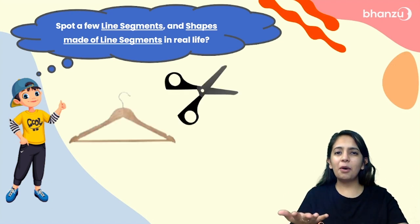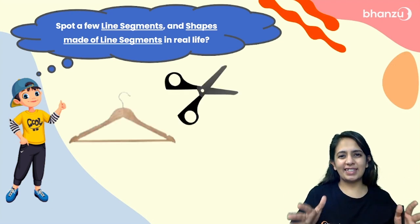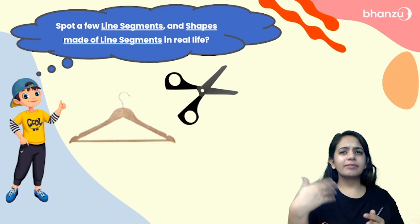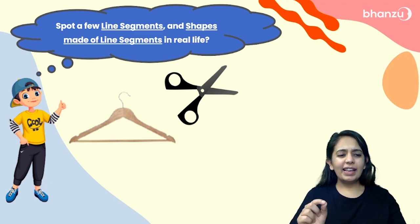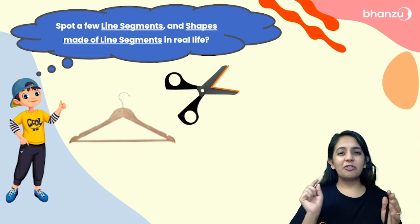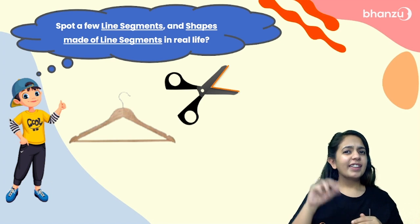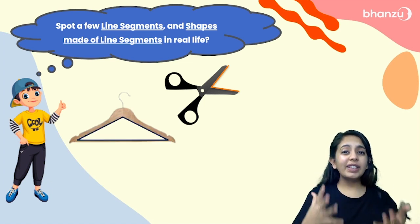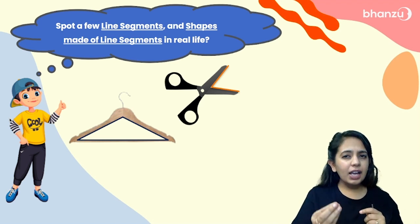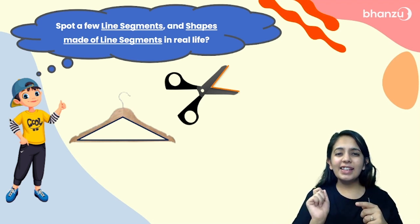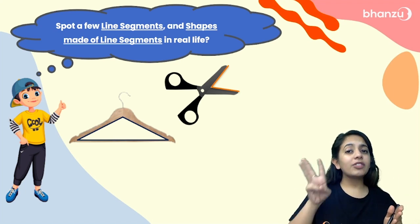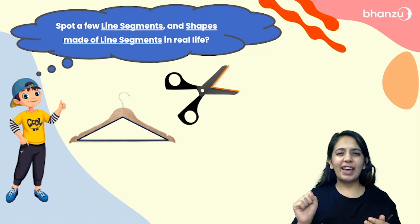For example: table, chair, windows, doors, scissors, lawn handle, etc. How many line segments can you find in a scissor? I can see two over here, and there are more as well. How many line segments can you find in a cloth handle? There are three line segments in the cloth handle, and if you observe carefully, all three are connected to each other, forming a closed shape. A closed shape made up of three line segments is called a triangle.